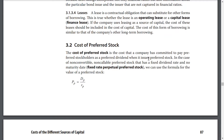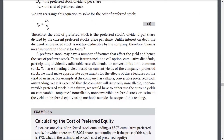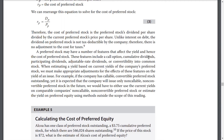In the case of non-convertible, non-callable preferred stock that has a fixed dividend rate and no maturity date, we can use the formula for valuation of a preferred stock. Therefore, the cost of preferred stock is the preferred stock's dividend per share divided by the current preferred stock price per share. Unlike interest on debt, the dividends on preferred stocks are not tax deductible by the company. Therefore, there is no adjustment to the cost for taxes.